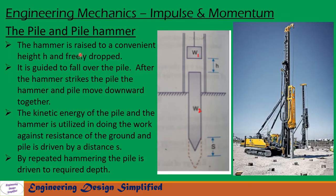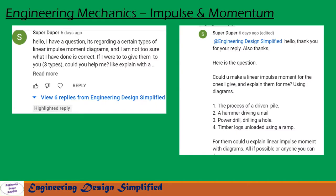First, the hammer is raised to a convenient height h and freely dropped — it is guided to fall over the pile. After the hammer strikes the pile, the hammer and pile move downwards together — that is Case 1. In Case 2, the hammer after impact rebounds, which I will discuss in the upcoming video. The kinetic energy of the pile and hammer is utilized in doing work against the resistance of the ground, and the pile is driven a distance s. Today's topic was requested by Super Duper — if you have any topic you want to learn about, please let me know in the comment section.